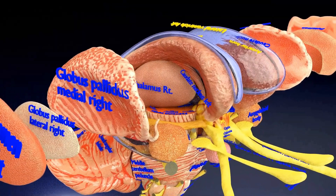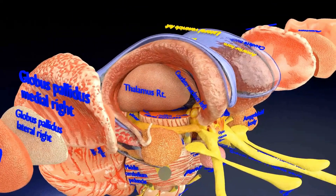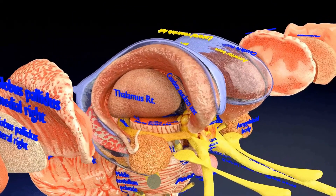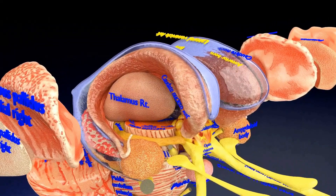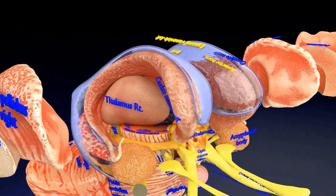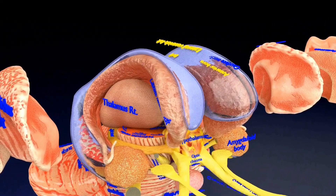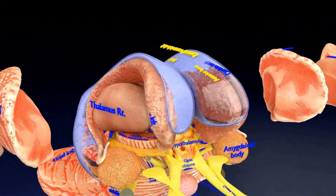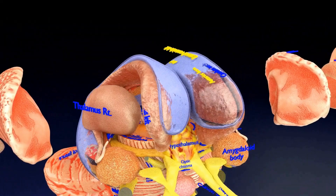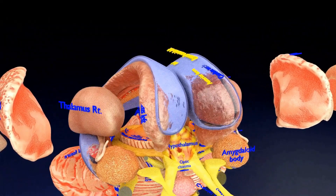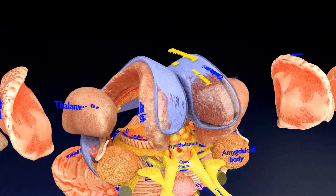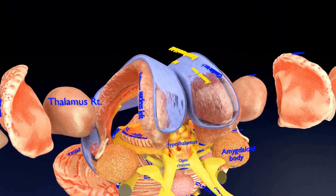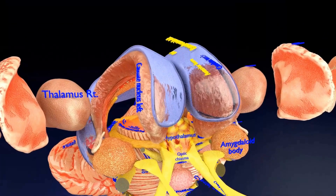The thalamus, although shown now, is not a part of the basal ganglia. Being located between the cerebral cortex and the midbrain, it has extensive nerve connections to both. The primary function of the thalamus is to relay motor and sensory signals to the cerebral cortex. It also regulates sleep, alertness, and wakefulness.